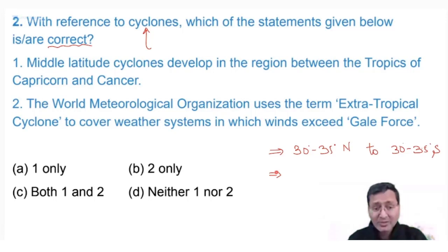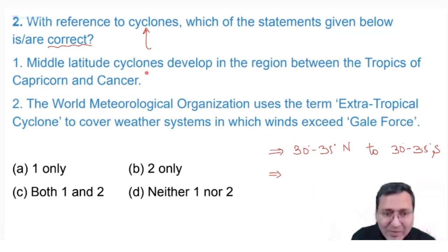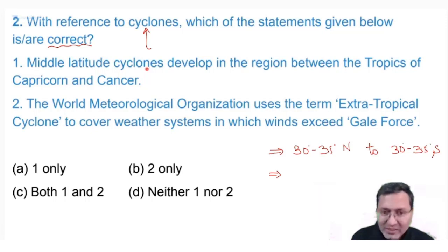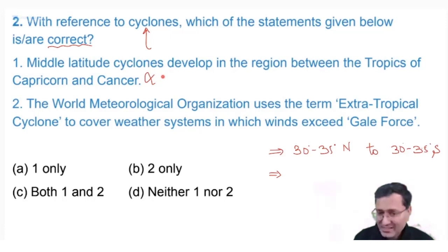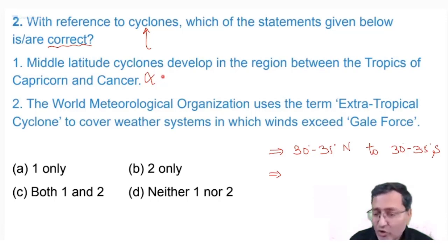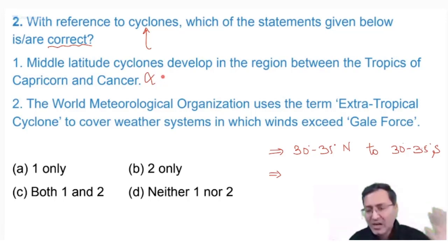Looking at the first statement: 'middle latitude cyclones' means temperate cyclones — that is the other name for temperate cyclone. The statement says they develop in the region between the Tropic of Cancer and Capricorn. This is 100% incorrect. In the region between the two tropics we have tropical cyclones, not middle latitude cyclones. So the first statement is out of contention.